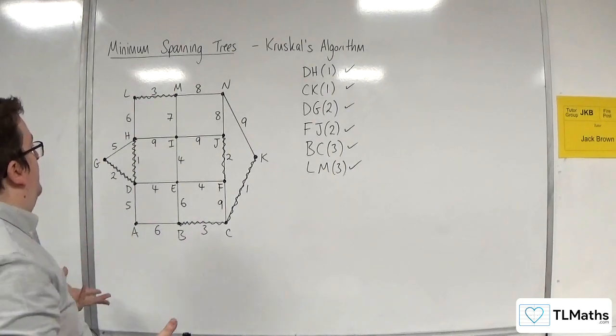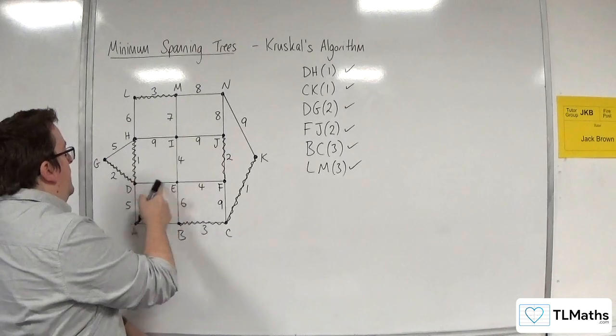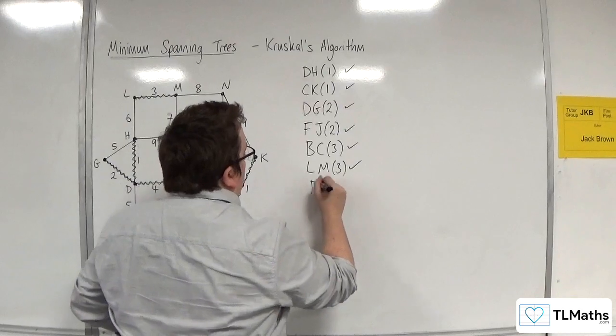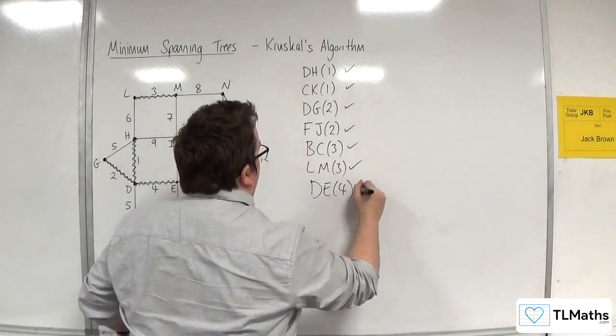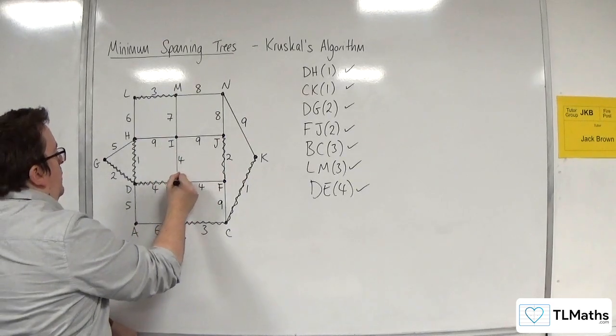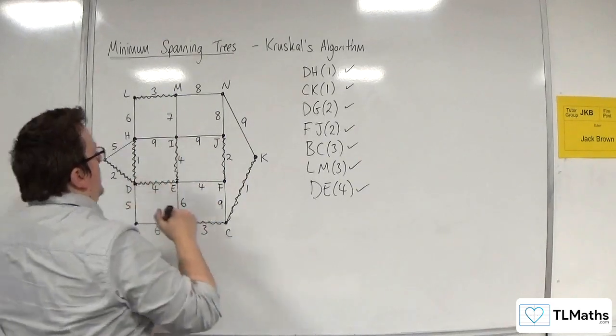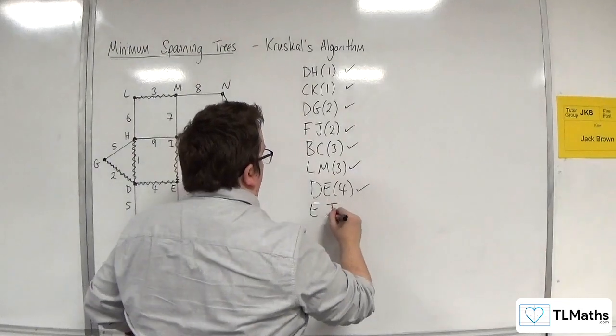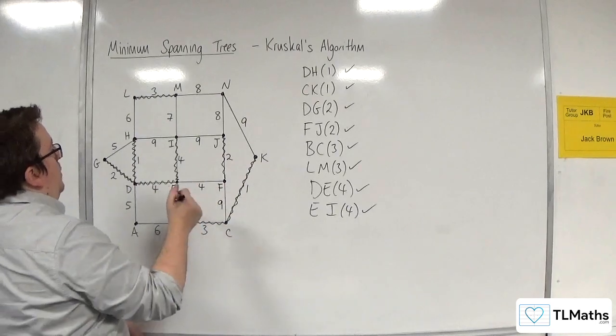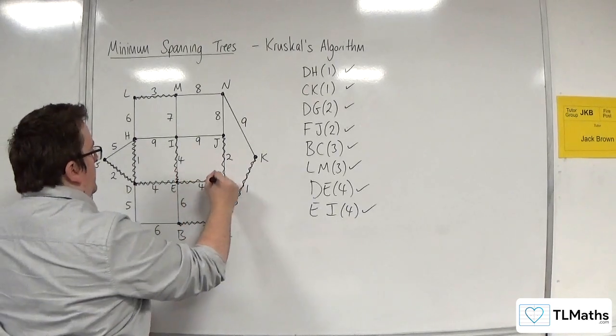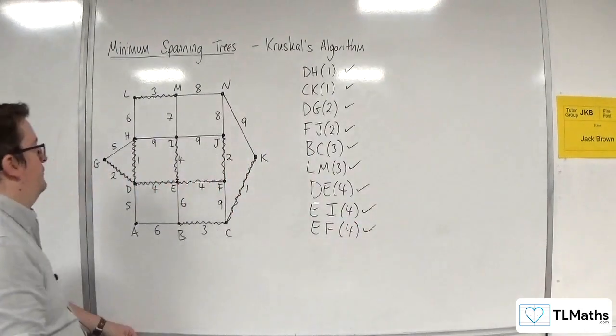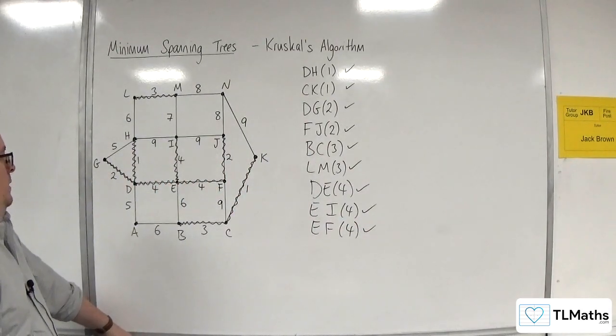No more 3s. We're going to go for 4s now. I can see a 4 here, so DE. DE with 4. That's good. I'll have that one. I see another 4 here, so EI. That won't cause a cycle. So that's all good. EI. I'll have that one. And I see another one here, EF. That won't cause a cycle either. So EF. It's all good.